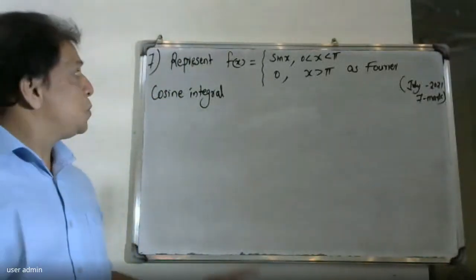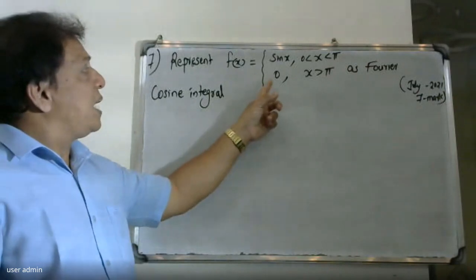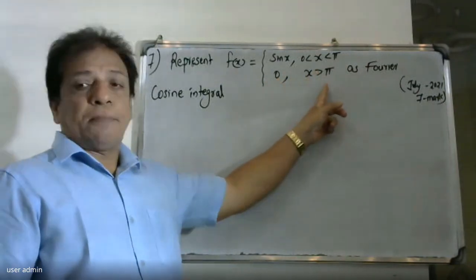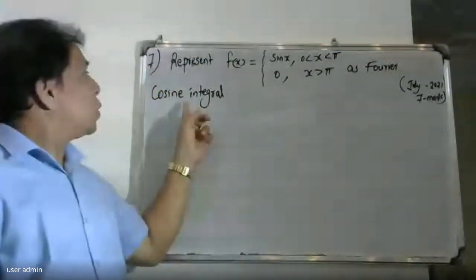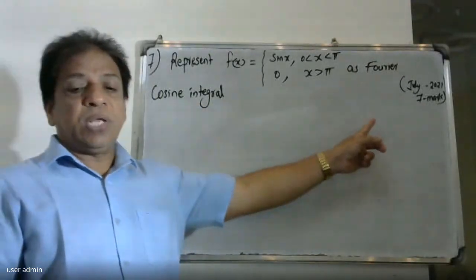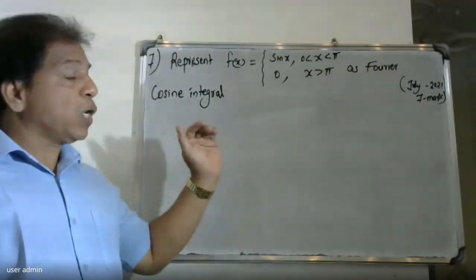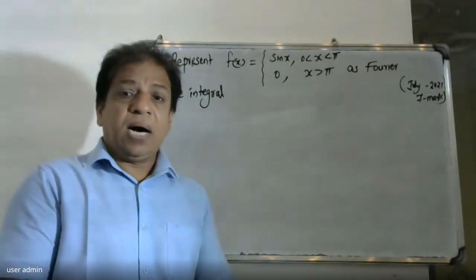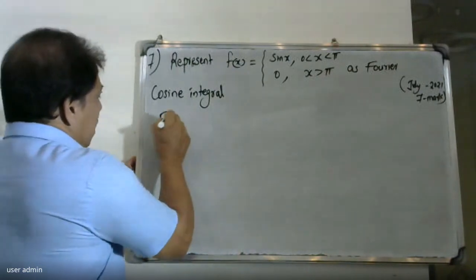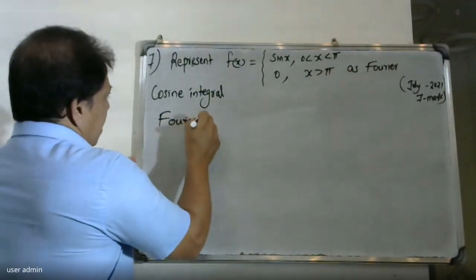Good morning students. The question is to represent f(x) = sin(x) for 0 < x < π, and 0 for x > π, as a Fourier cosine integral. This is a day-8 topic about the Fourier cosine integral, and we are going to find the answer using the formula.